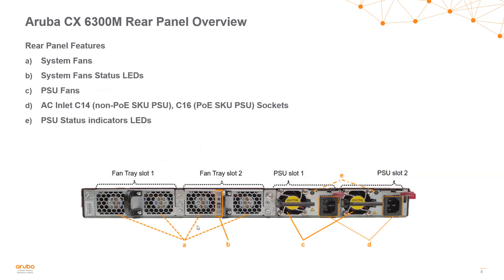Looking at the rear of the Aruba CX 6300 modular switch, we can clearly see it supports redundant fan trays and redundant power supplies. The fan trays are located on the left with the fan tray LED, and the power supplies are on the right with the power supply LED. The power supplies use either a C14 socket for non-PoE or a C16 socket for PoE versions.